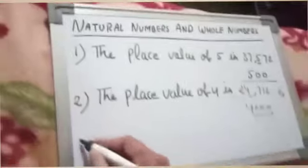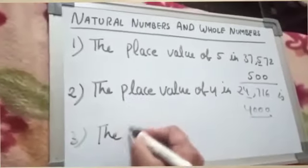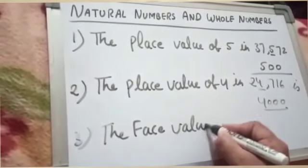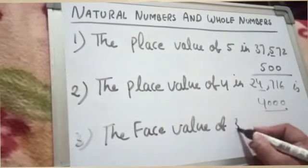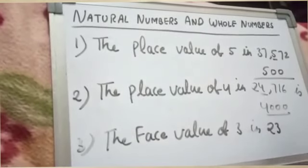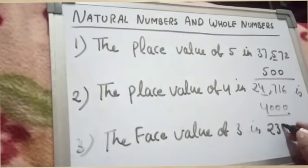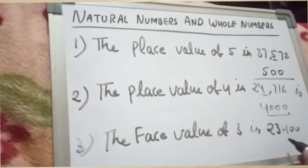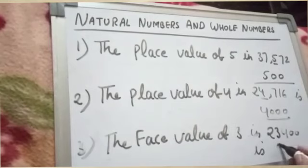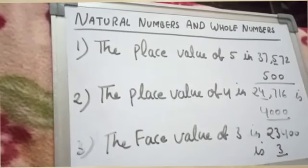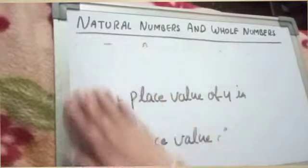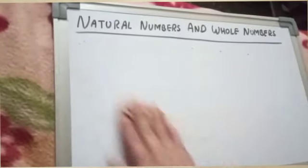The next example is: what is the face value of 3 in the number 23,400? The face value of 3 in 23,400 is 3, because the face value is the digit itself. Students, now you have understood the concept of place value and face value.